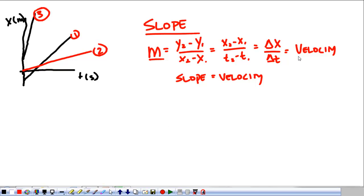So when you find the slope, it tells you velocity. So our statement to take home from this is that the slope of position versus time is velocity.